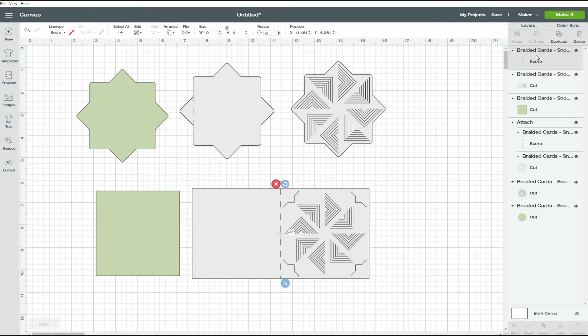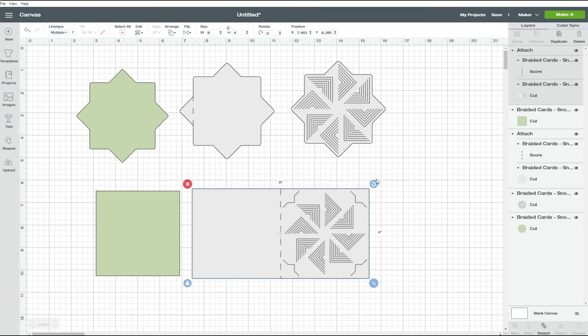Click on the top layer, hold the control key on a PC or command key on a Mac and click on the second layer. You can do this also by clicking and dragging a rectangle that includes both elements. And once you have both of them selected, you can click on attach. That will attach that score line to that cut line around.